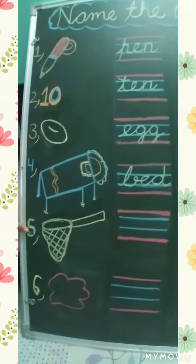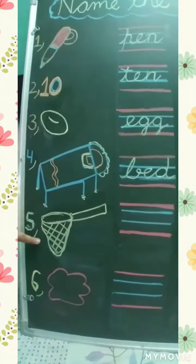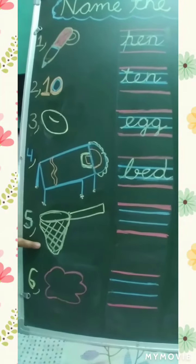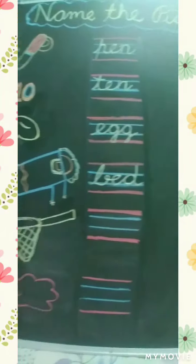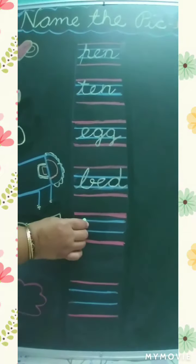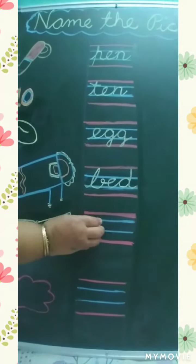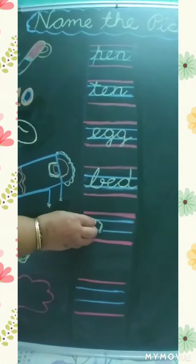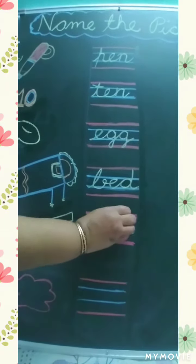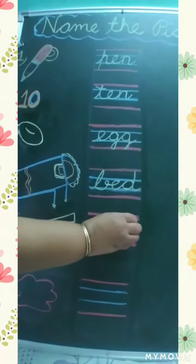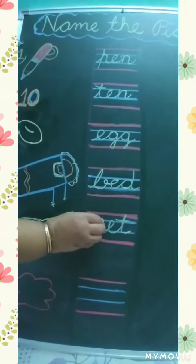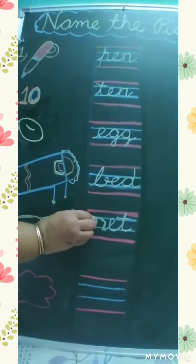And fifth picture, this is picture of net. Jis mei fish pakad te hai, machli pakad te hai, usko net bolte hai. N, E, T, net. This is not nest.